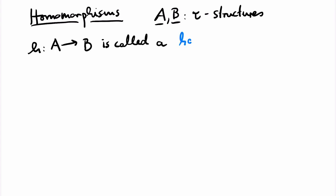Our third and last general definition for structures for today is the definition of homomorphism. Again, suppose that A and B are structures with the same signature. A function from the domain of A to the domain of B is called a homomorphism if it preserves all relations and operations.